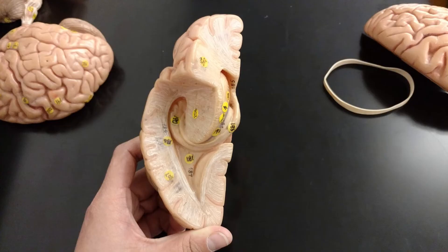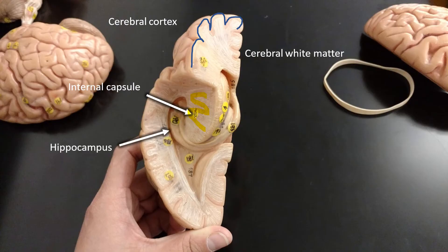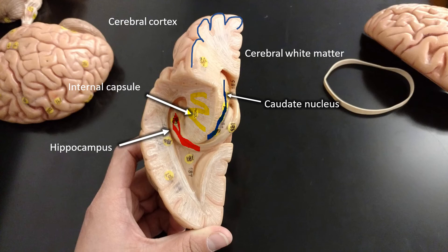With a model where you can pull off the top half of the cerebrum, you can see that the cerebrum has layers: the outer pink layer is the cerebral cortex, while the inner white layer is cerebral white matter. You can also see the internal capsule, the hippocampus sitting on the floor of the brain, the caudate nucleus wrapping around, and the fornix extending internally into the brain.